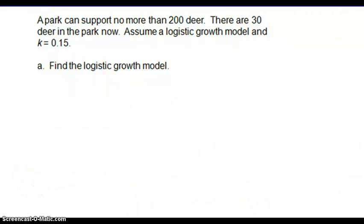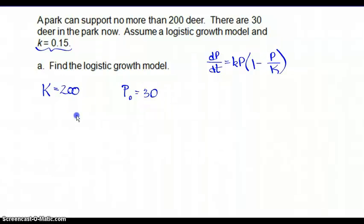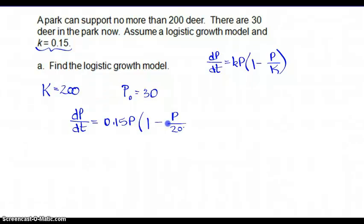A park can support no more than 200 deer, so that tells me K equals 200. There are 30 deer in the park now, so the initial population is 30. Assume a logistic growth model with the rate of growth little k as 0.15. Our logistic growth model is: dp/dt equals 0.15 times p times the quantity 1 minus p over 200.